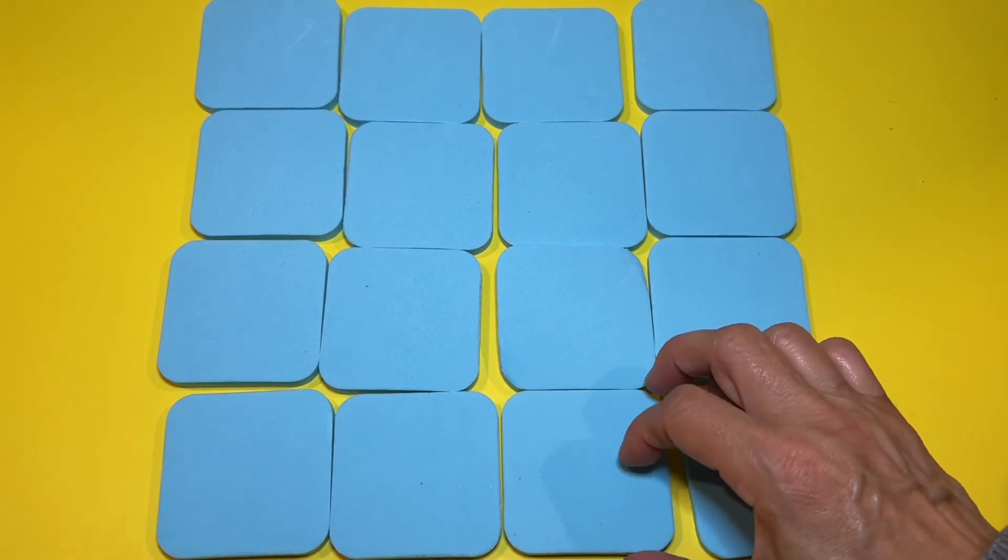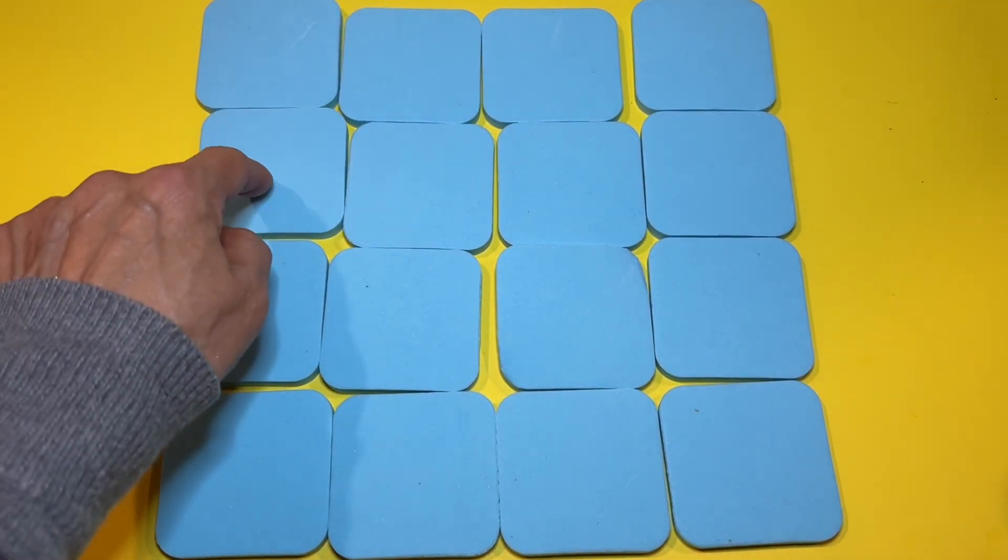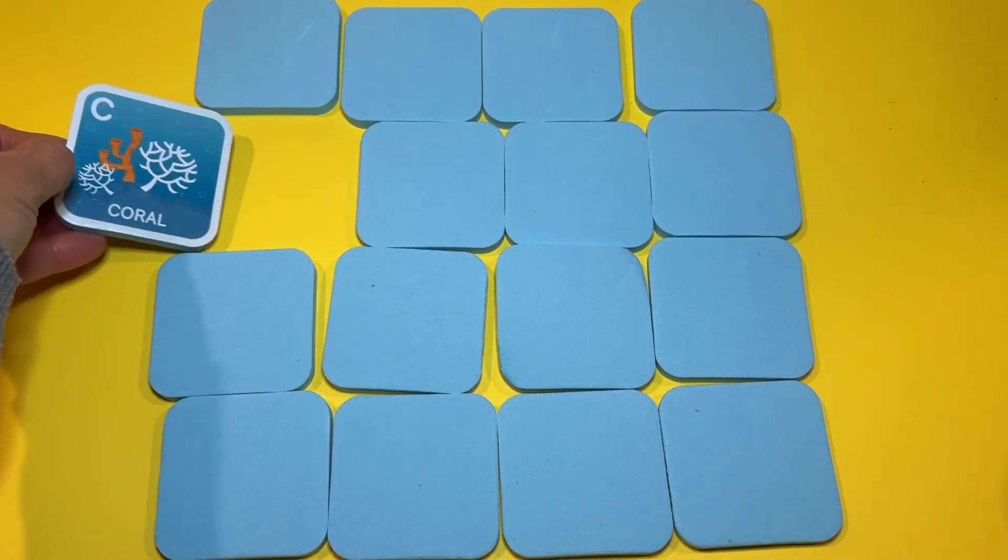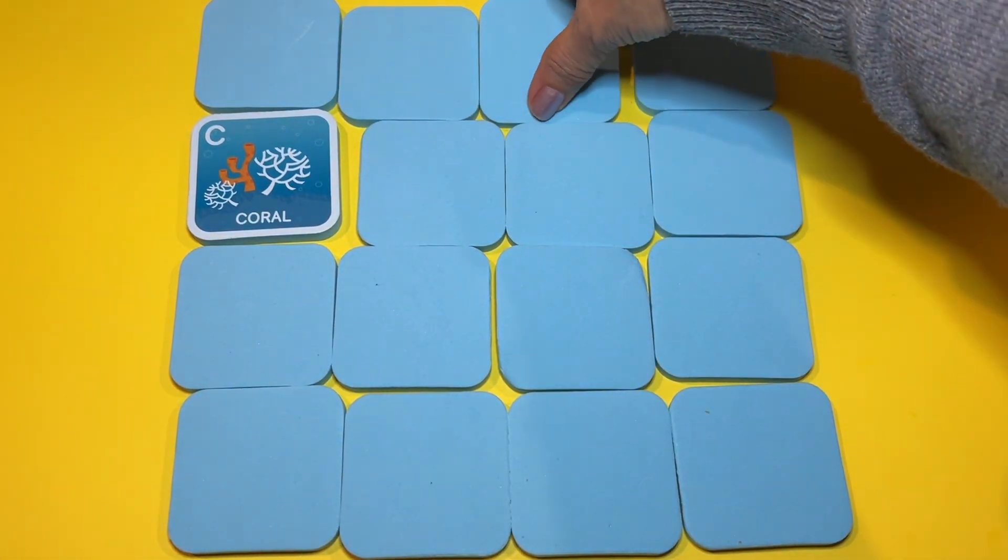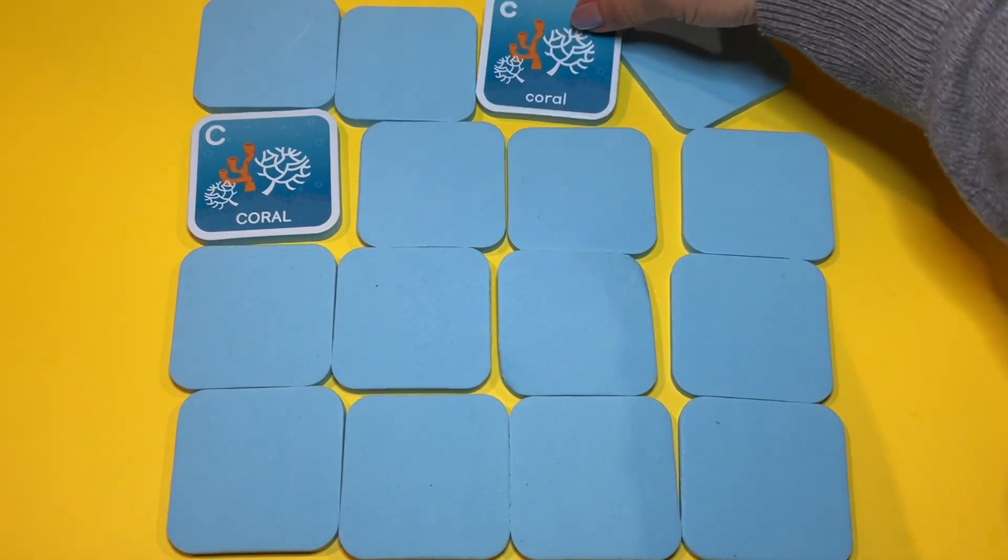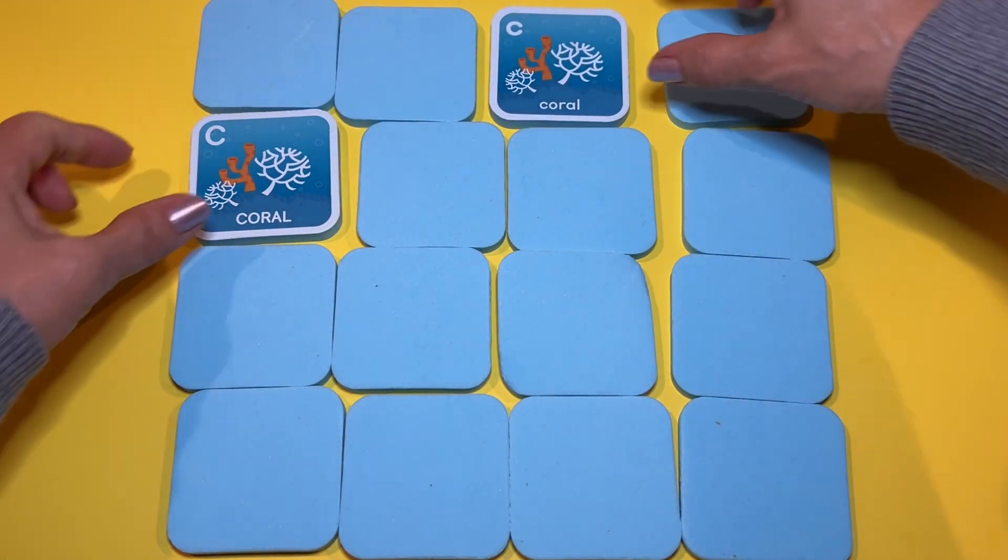I see. Okay, now, do you know where the other coral is? Coral. Is it coral? Is it this one? Is it this one? It's this? It's the coral. We made a match. Yay. So now that we made the match, we take these out.